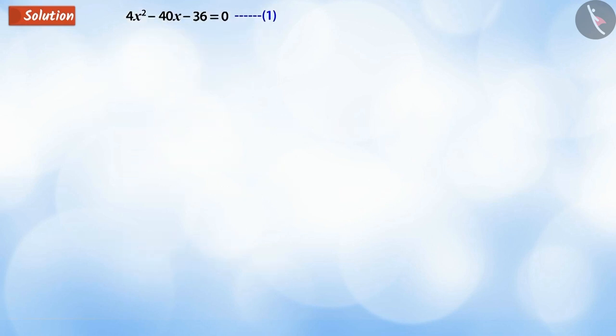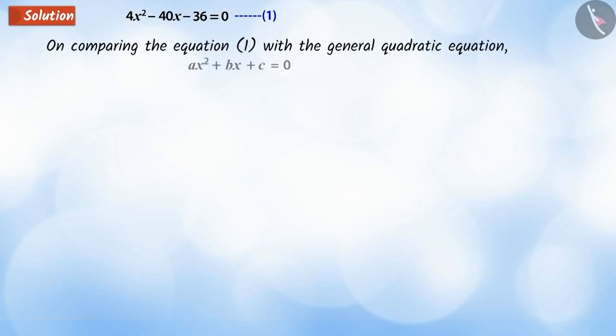You must remember what we did in the previous video to solve this type of question. Well done. For this, compare equation 1 with the general quadratic equation, where a equals 4 and b equals minus 40 and c equals negative 36.